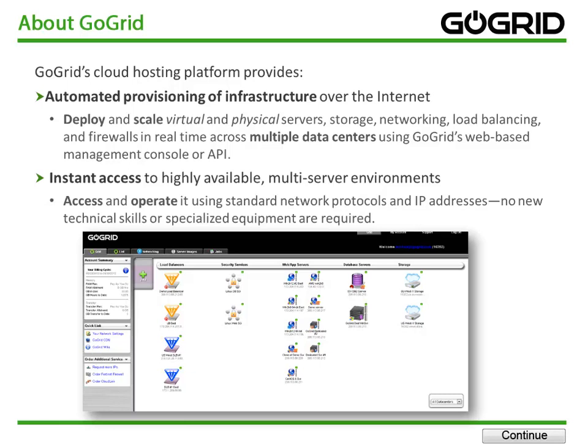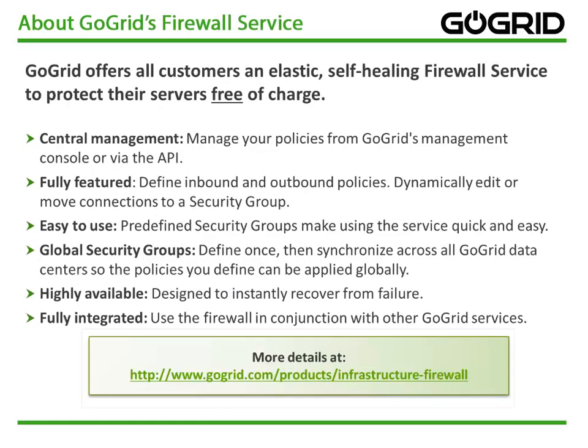There's no new technical skills required. GoGrid's firewall service is an elastic, self-healing firewall service. It's free of charge and fully featured, allowing customers to define inbound and outbound policies. It's easy to use, so a customer can determine a security group and apply that globally across data centers. It's also designed to be highly available, meaning your security groups instantly recover from failure. And it's fully integrated, so you can use the firewall in conjunction with other GoGrid services.